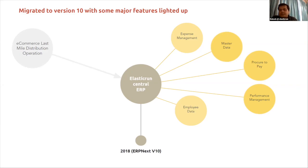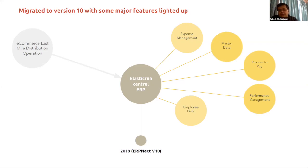We also had supplier master data to transfer from version 7 to version 10. The transition was smooth but we had structural changes in our documents for the new version. We migrated everything — mapped all data, created employee master data including designations, departments, branches, and item master. All the critical master data required to run our P2P process and HR processes was finalized. In 2018, we did a company-wide rollout of the new ERPNext version as our sole ERP for all internal processes.